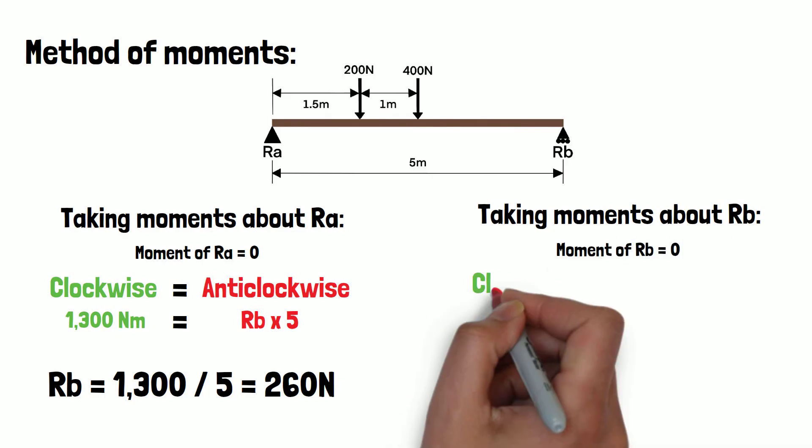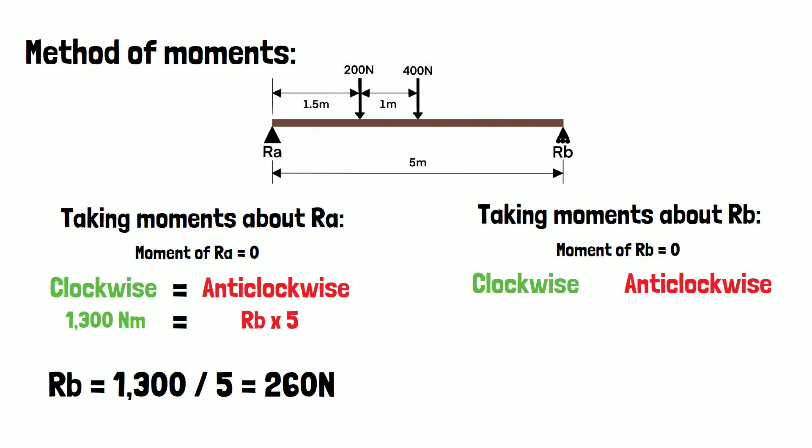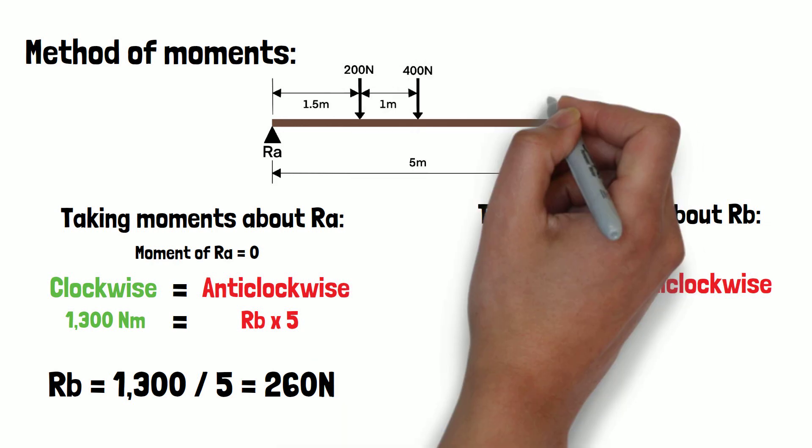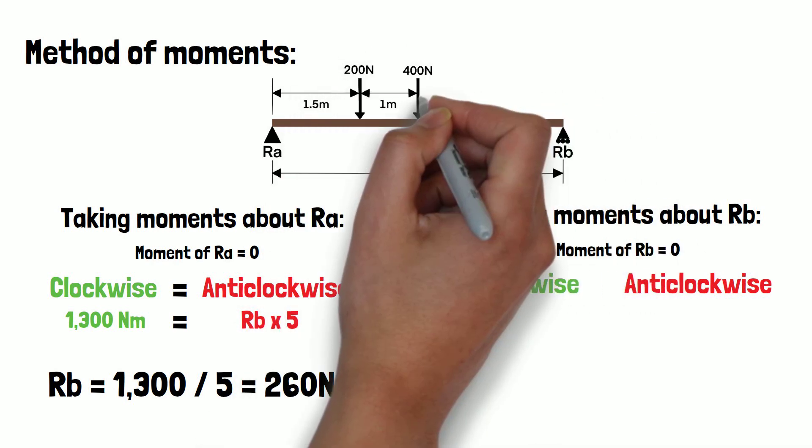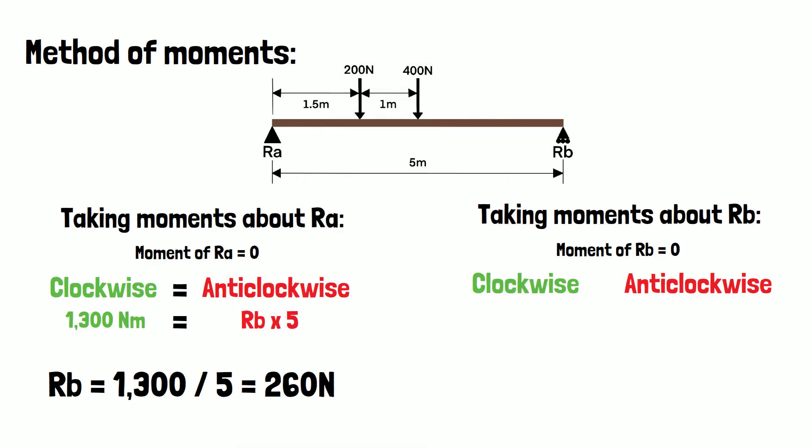Next we will calculate the clockwise and anticlockwise moments again. Starting with the anticlockwise moments this time, we have a 400N load at a distance of 2.5 meters and a 200N load at a distance of 3.5 meters. So total anticlockwise moments equal 400 times 2.5 plus 200 times 3.5, which equals 1700 Nm.